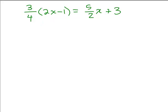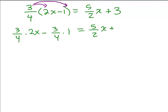So we only have one distributive property right here. So we've got 3/4 times 2x minus 3/4 times 1, and over here we just have 5/2x plus 3. So you could reduce this 2 and 4, but I see that I've got a 4 as a denominator over here anyway so I'm just going to leave it as 4.